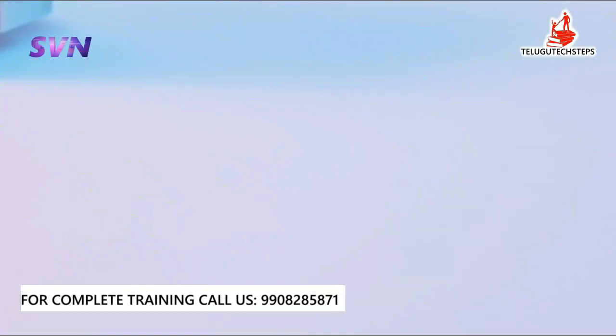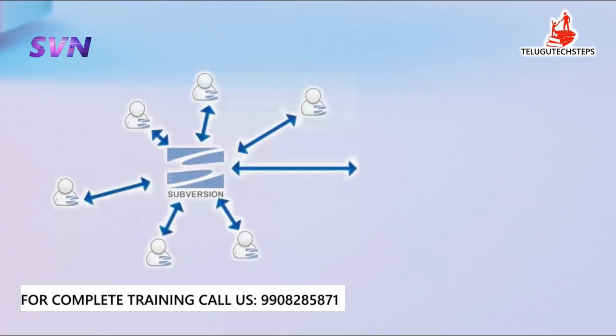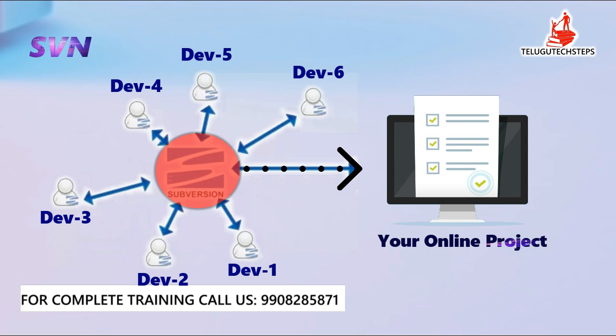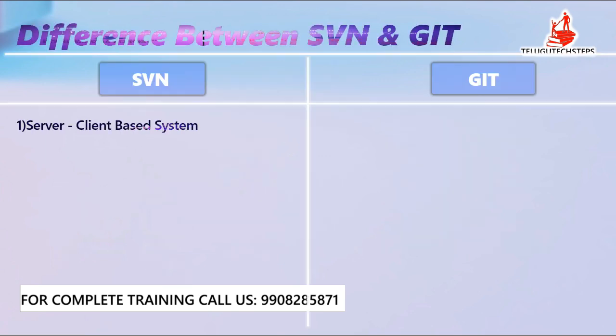The first point: in SVN, it is server and client based. Every developer works with a single centralized server. Each and every developer must be connected to that particular server — it is a centralized server — and they have to stay connected to do any work or update. That is the remote server. That is the first point. Coming to Git: